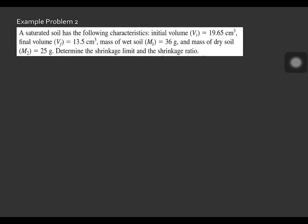Let us proceed to example problem number 2. A saturated soil has the following characteristics: the initial volume VI is equal to 19.65 cubic centimeters, the final volume VF is equal to 13.5 cubic centimeters, the mass of wet soil M1 is equal to 36 grams, and the mass of dry soil is equal to 25 grams. Determine the shrinkage limit and the shrinkage ratio.